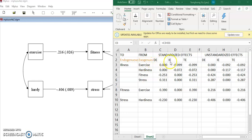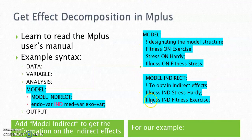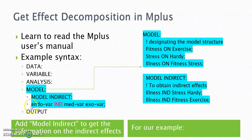We have completed the manual calculation of the direct, indirect, and total effects for this entire model. Now it's time to learn how to get the indirect effects in Mplus using the command file. All you need to do is add several lines in your model section. After you specify the model structure, add a subcommand model indirect, and list the indirect relationships. Start the line with the name of your endogenous variable, then the keyword IND, which stands for indirect, and end this line with your exogenous variable. In between, you have the variables that connect your exogenous variable with the endogenous variable in this indirect relationship.